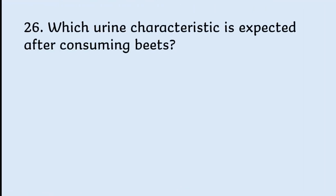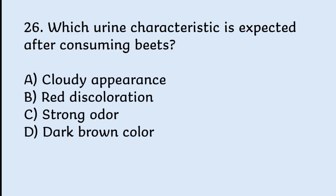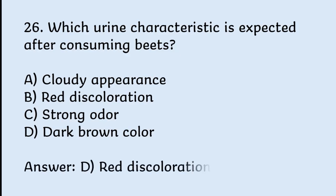Which urine characteristic is expected after consuming beets? Options: cloudy appearance, red discoloration, strong odor, dark brown color. Correct answer is red discoloration.